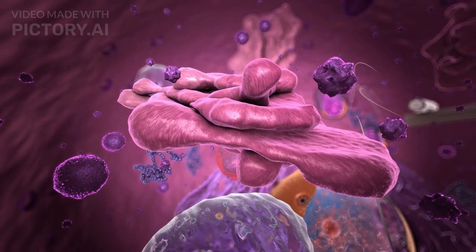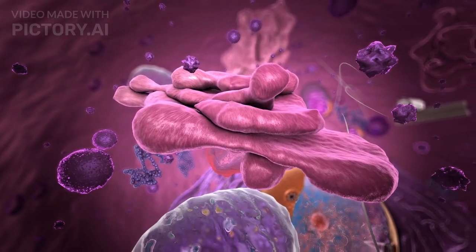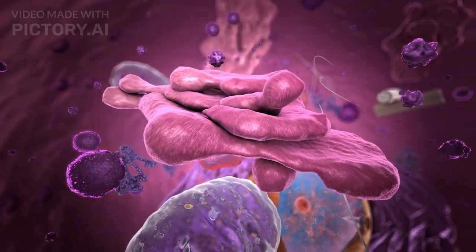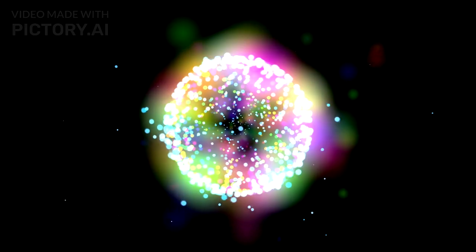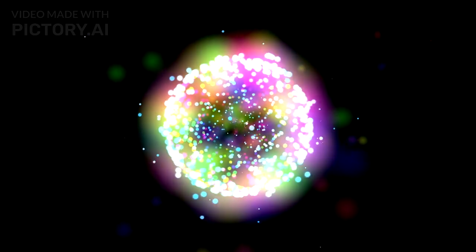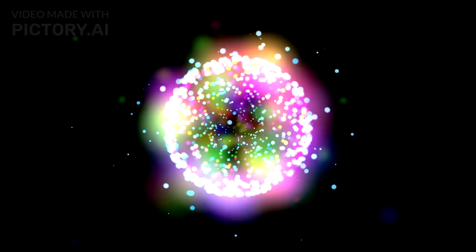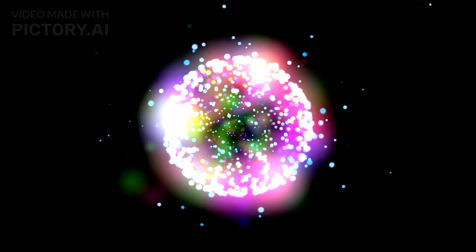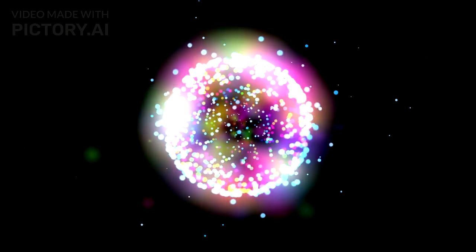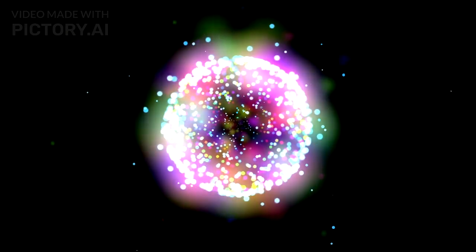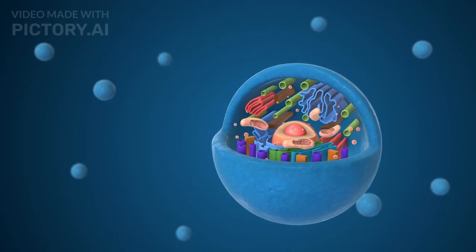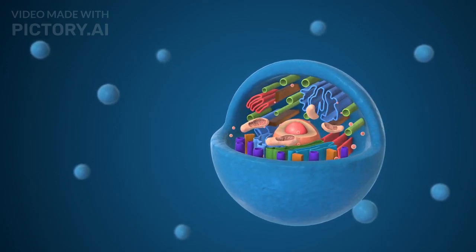Next, we have the Golgi apparatus, the cell's post office. The Golgi modifies proteins and lipids received from the ER, then sorts and packages them into vesicles. It processes, sorts, and packages proteins and lipids, preparing them for delivery to their final destinations within or outside the cell. Vesicles bud off from the Golgi and are transported to different parts of the cell.